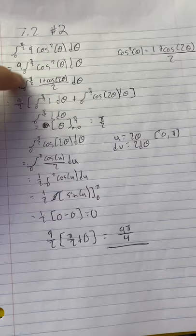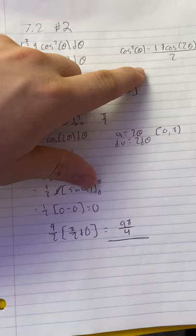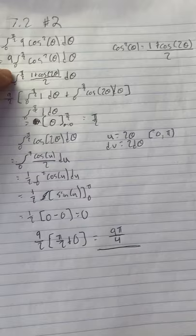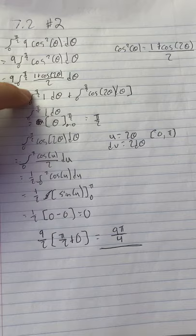We know that cosine squared theta is 1 plus cosine 2 theta divided by 2. From there we plugged that in, then divided the 2 out to make it 9 over 2 integral from 0 to pi over 2 of 1 plus cosine 2 theta.